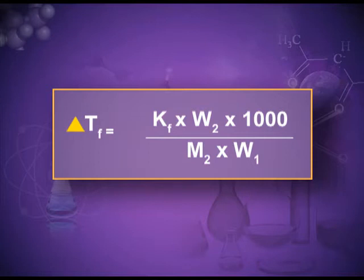The expanded mathematical formula is: ΔT_f = K_f × w₂ × 1000 / (M₂ × w₁). Here, ΔT_f is inversely related to the molecular mass of the solute. Using this formula, you can find delta T_f, the molecular mass of solute, or any other quantity depending on the numerical. Keep in mind that if temperature is given in degree Celsius, you must add 273 to convert it to the Kelvin scale.